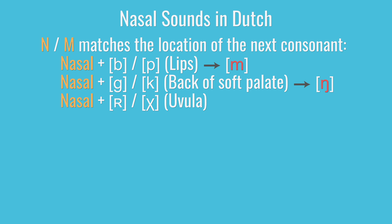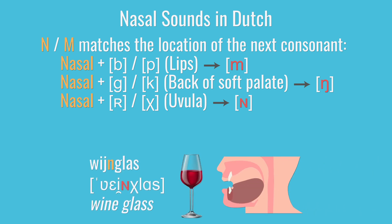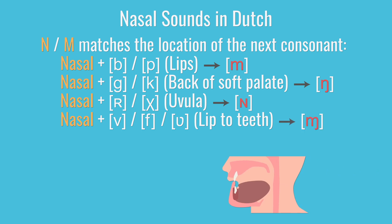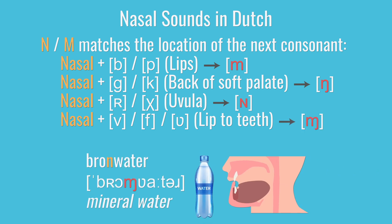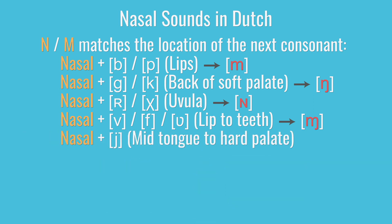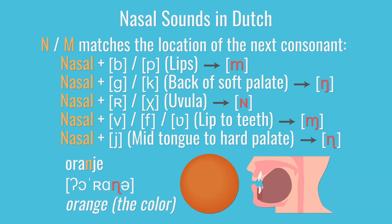So an n before a b or a p, a consonant made with your lips, it's going to turn into an m, also made with your lips, giving you words like pinpas. An n before a k will turn into that back n, as in mankracht. An n before a uvular consonant like an r or a g will turn into an n made even further back in your mouth, as in wijnglas. And n or m before an f, v, or s sound will be made using your bottom lip against your upper teeth, as in bronwater. And an n before a j turns into nh, as in oranje. All of these transformations are pretty unconscious — just let your tongue do what it naturally does.